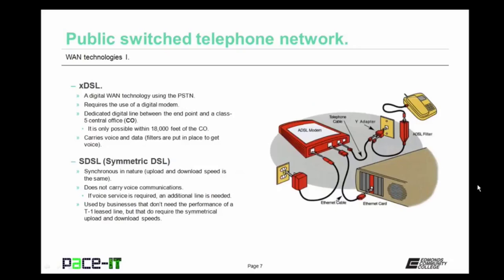DSL uses a dedicated digital line between the endpoint and a Class 5 central office, or CO. In order for the most basic forms of DSL to be installed, you have to be within 18,000 feet of the CO. DSL is capable of carrying voice and data. When it does carry both, filters are put in place so the voice signal comes through without interference. Now let's move on to the different types of DSL.